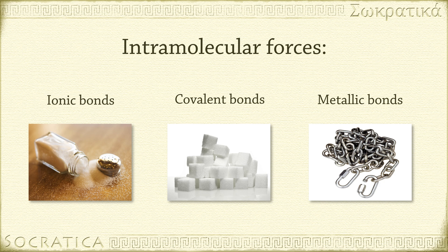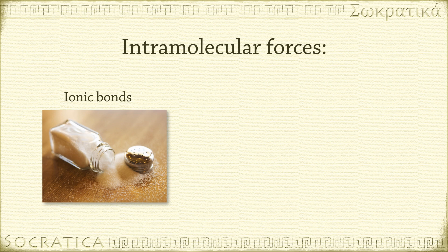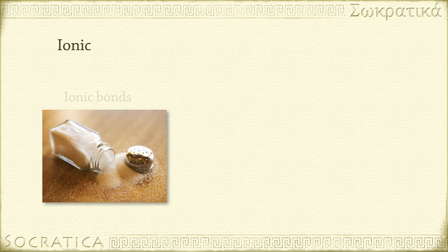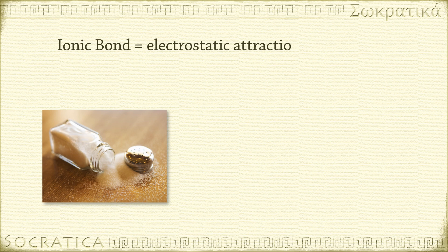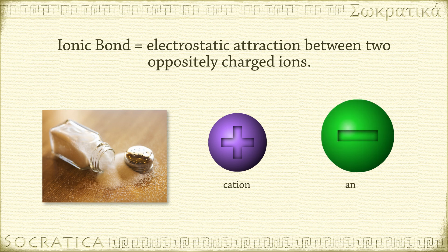Covalent bonds and metallic bonds will be featured in their own videos. An ionic bond is formed from the electrostatic attraction between two oppositely charged ions — one positive, the cation, and one negative, the anion. The cation is usually a metal, and the anion is usually a nonmetal.